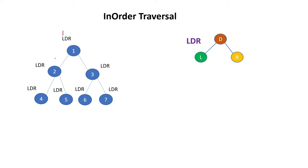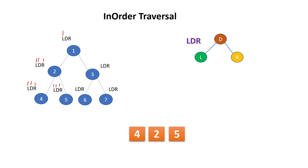The root node says to go to the left side, so we come here, then we further go to the left side. Left side nothing is there, so we go for D — D means the parent node, in this case it is 4, we print it. Right side nothing is there, then we come back. Here D we print as 2, then we go to the right. After coming to the right, left nothing is there, D will be 5.